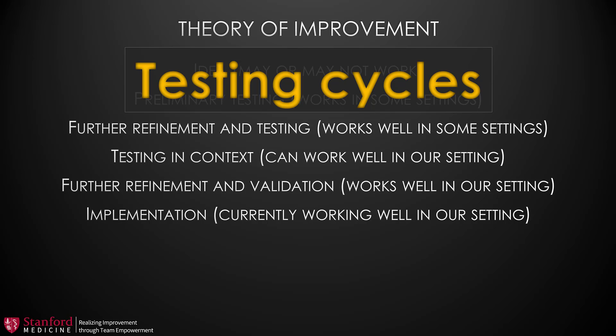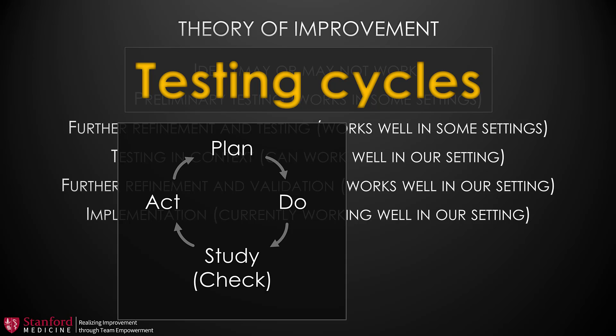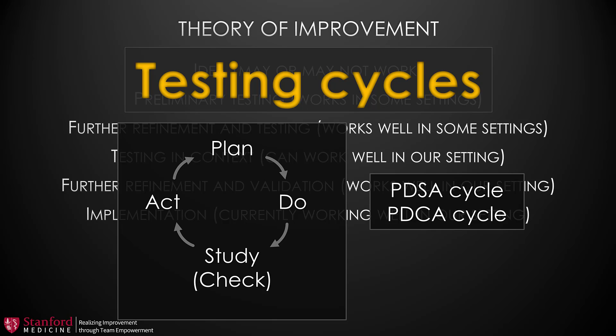So, what we are talking about here is testing our possible solutions many times — in other words, these are testing cycles. As we run any test, we should follow a simple procedure. First, we should plan the test. Then we should do the test. Then we should study or check the results. Then we should act upon the results. And based on the results, we should think of our next test and run it again. This doesn't have to be elaborate, but the test should have at least some basic structure. This is known as the Plan-Do-Study-Act cycle or the Plan-Do-Check-Act cycle.